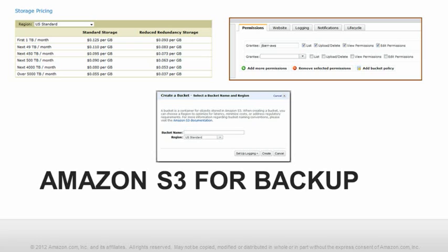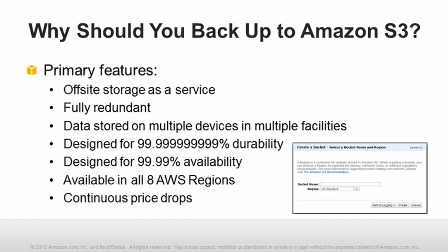Let's take a look at Amazon S3. You probably know a little bit about S3 already, so I want to cover some of the more important details to justify it for backup. Primary features that make S3 well-suited to backup include the fact that it is off-site storage as a service. S3 is fully redundant, so you don't have to worry about making multiple copies of your data — by simply uploading it to S3, you are ensuring that redundancy. Data is stored on multiple devices in multiple facilities. S3 is designed for 11 nines of durability and 4 nines of availability.